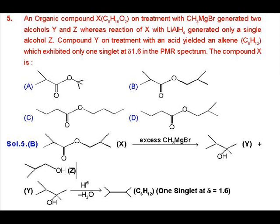Now, we proceed further. The alcohol Y gives us an alkene C6H12. And this alkene has only a singlet in NMR spectrum. That means its all 12 hydrogen atoms are of identical nature. So, this alkene can be 2,3-dimethyl but-2-ene. So, according to that, the given compound X should be the compound given in option B.